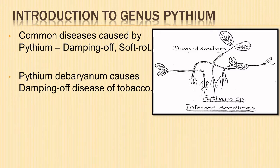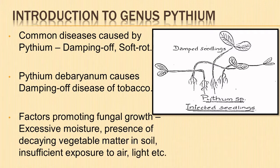Common widespread diseases caused by Pythium are damping off, soft rot, wheat rot, foot rot of seedlings, and many others. The most common species is Pythium debaryanum, which causes damping off disease of tobacco, tomato, etc. Excessive moisture, presence of decaying vegetable matter in soil, overcrowding of seedlings, and insufficient exposure to air and light are factors that promote fungal growth.